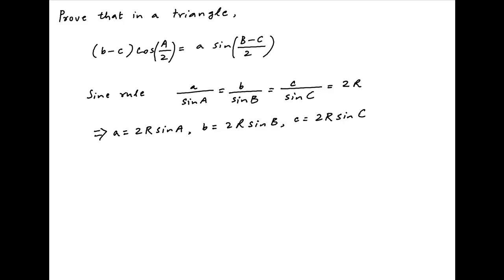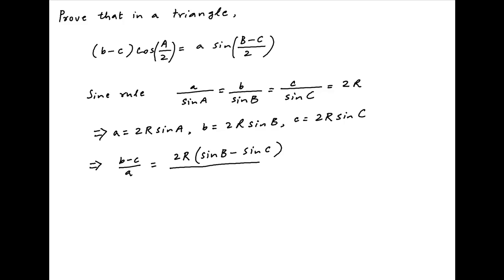Using these results, (b - c) upon a is equal to 2R(sin B - sin C) divided by 2R sin A. The 2R cancels across the numerator and denominator.